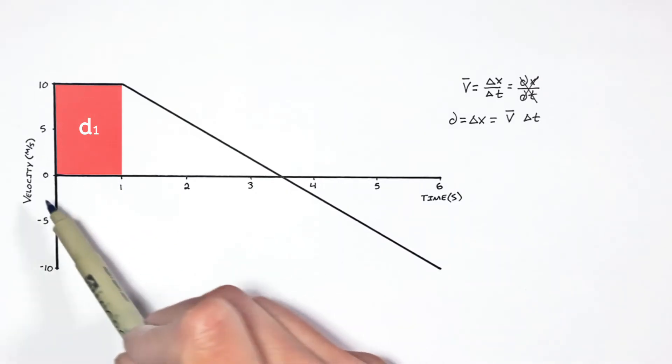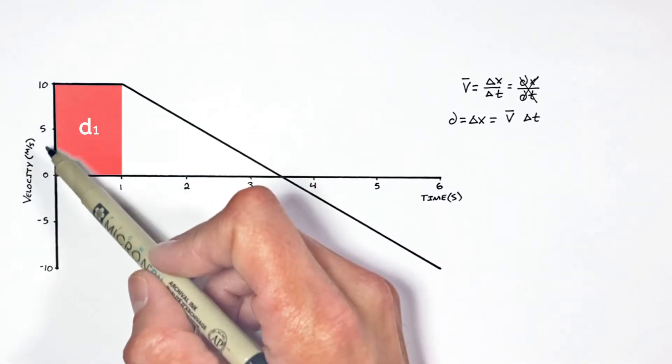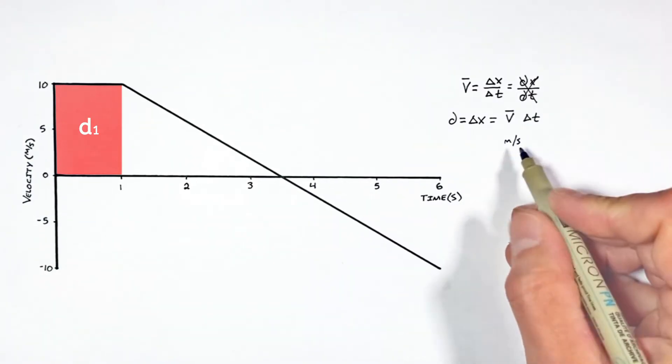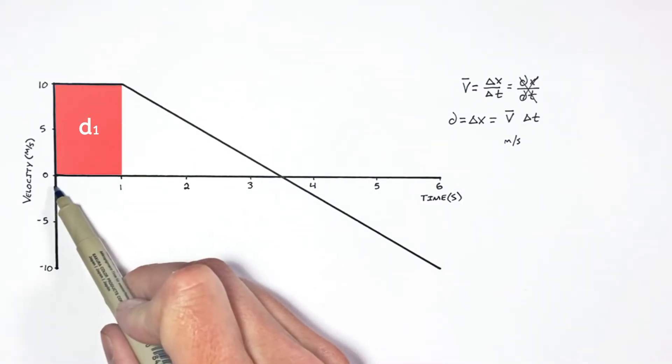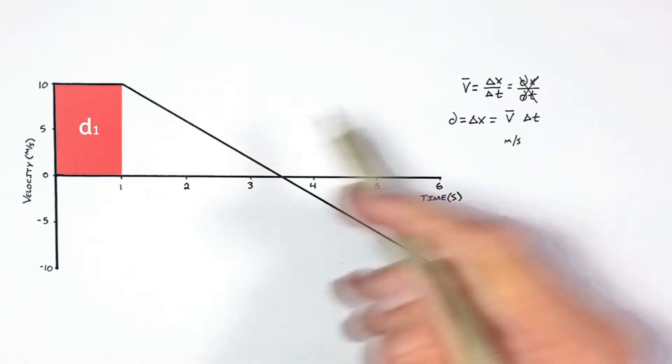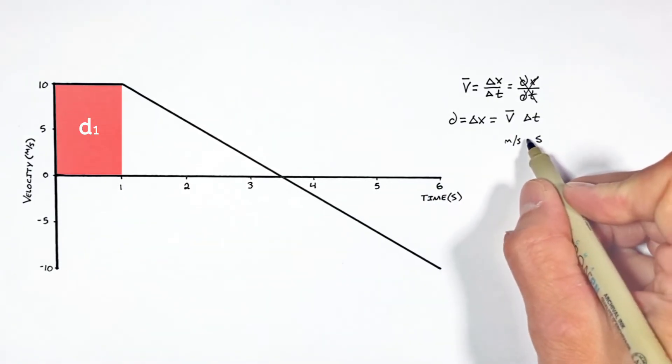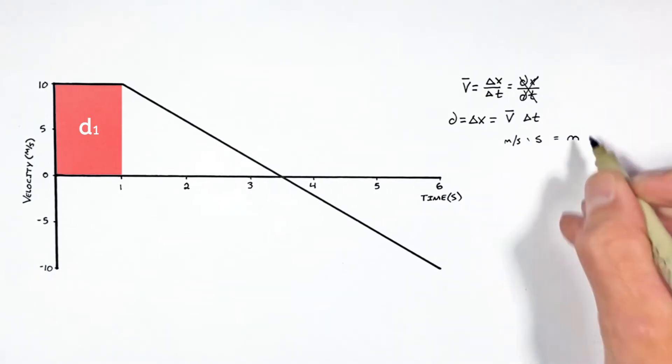I mean, look at the units here. On our y-axis, we have velocity, that is meters per second. And if you multiply those meters per second by the base here, that is time, which is measured in seconds. Well, meters per second multiplied by seconds is going to give us meters. That is the units of displacement.